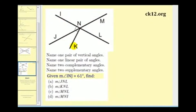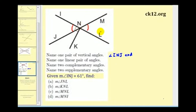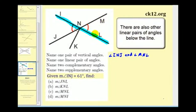Let's take a look at the last problem based on this diagram. The first question asks to name one pair of vertical angles — two non-adjacent angles formed by intersecting lines. Angle INJ and angle MNL are vertical angles. The next question asks to name one linear pair of angles: angle INM and angle MNL form a straight line and are a linear pair, and therefore supplementary.